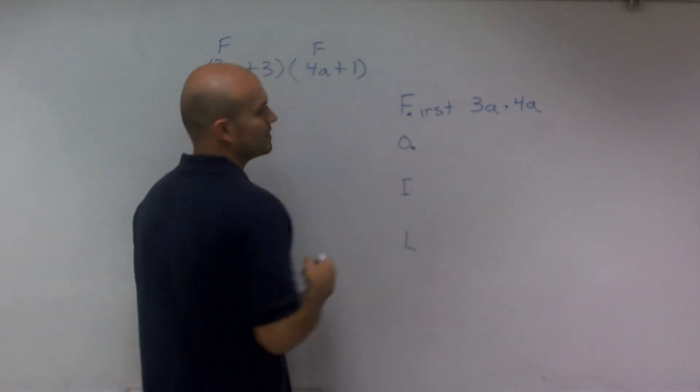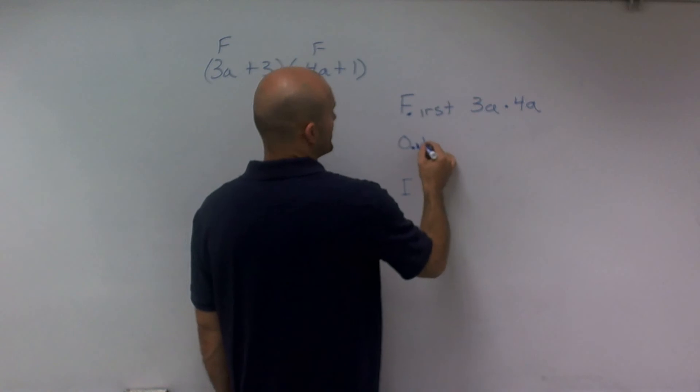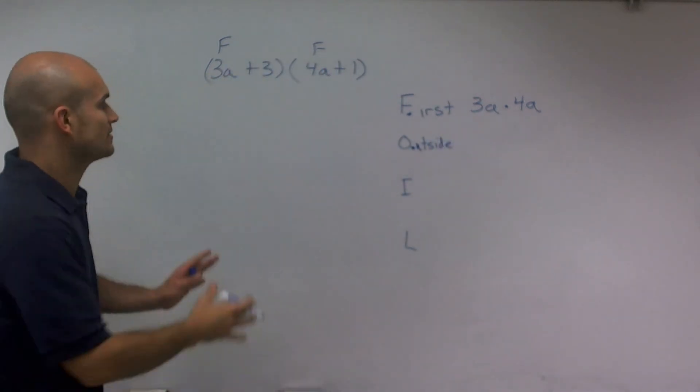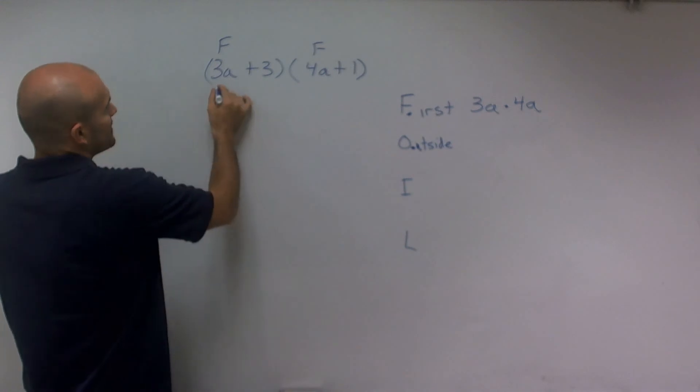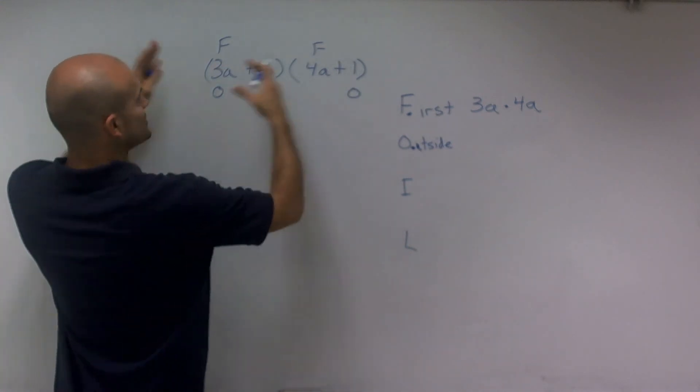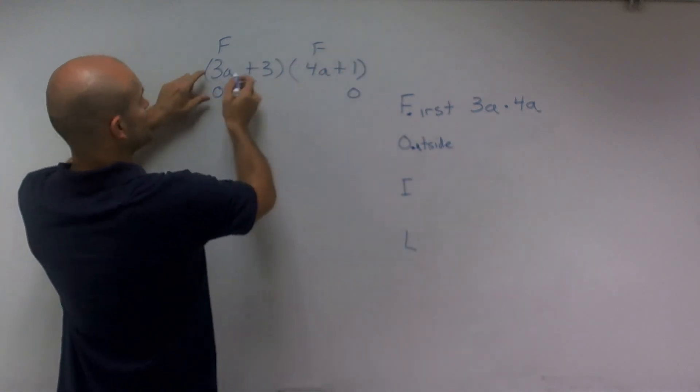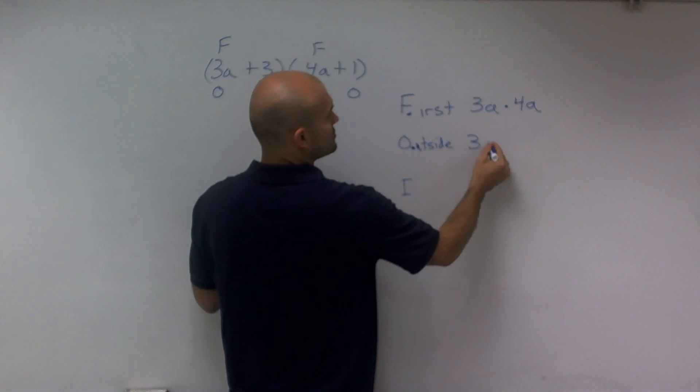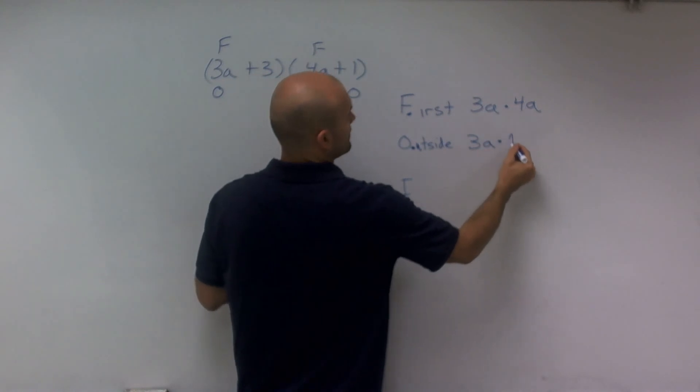Then the next one is O, which means the outer, or I like to say the outside terms. So the outer terms we think of are going to be, if you look at this now as a whole, the outer terms or the outside terms are going to be 3a and 1. So I'm going to multiply those two numbers, which would be 3a times 1.